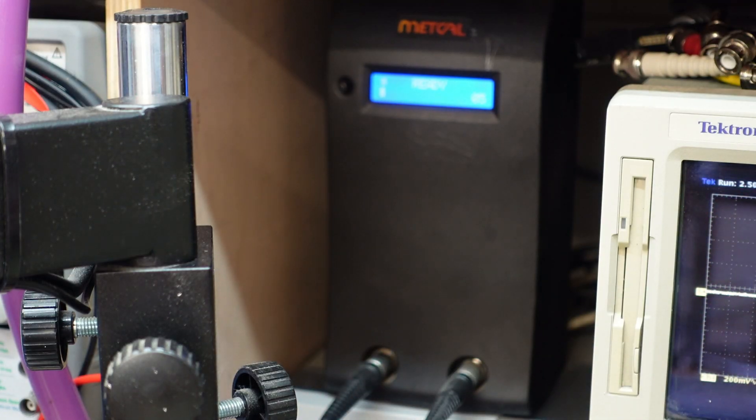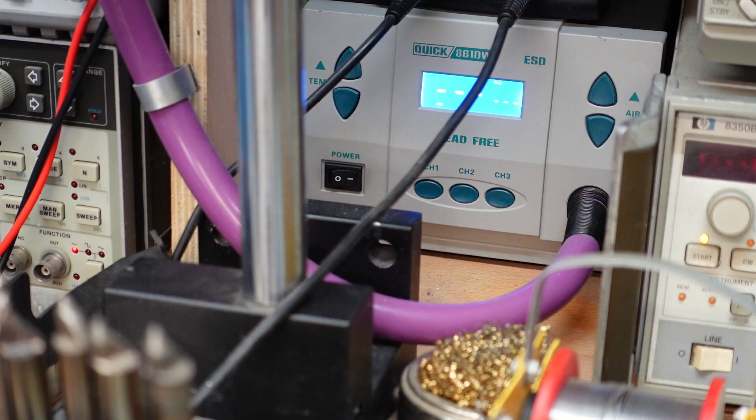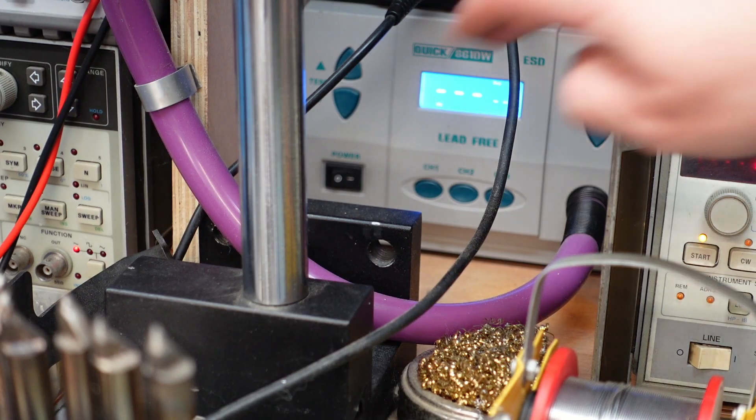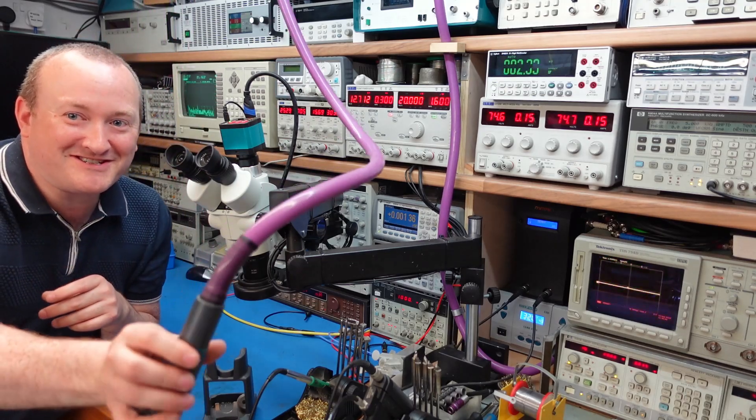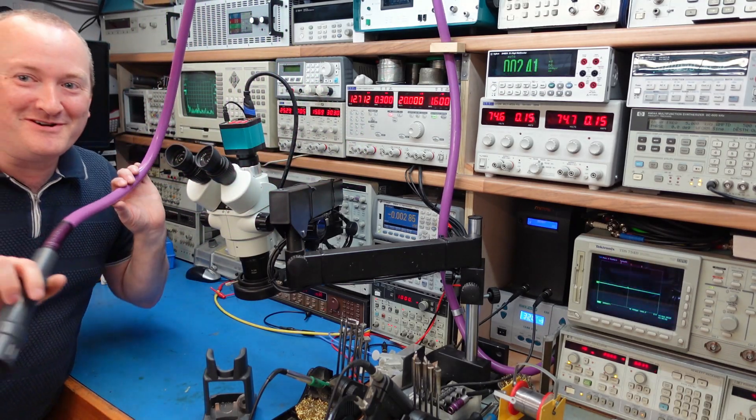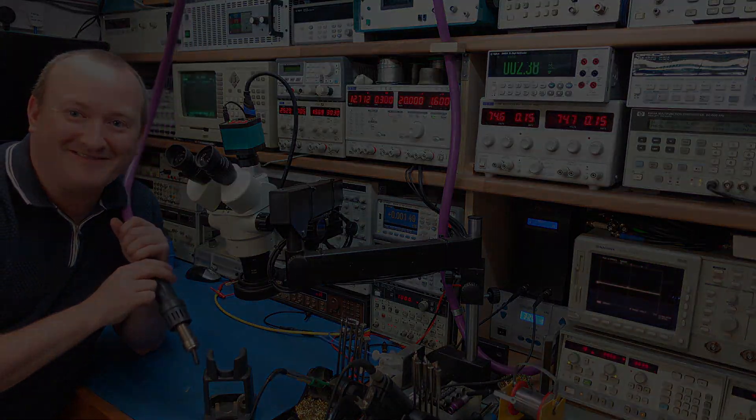The downside is they're both controlled into the same control unit so I can only actually have one at a time. Generally I'm using hot air for surface mount soldering. I'm using a Quick 861DW hot air station here. I did have to extend the tube quite a lot, about six foot in total. That works really well—I can reach both benches with it.